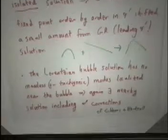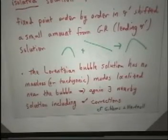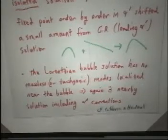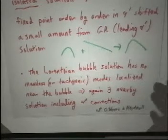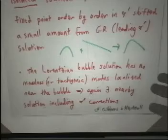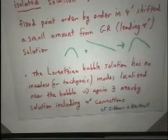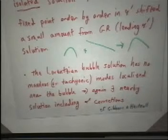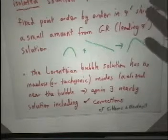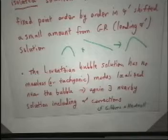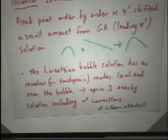In the Lorentzian case, in the four dimensions, we've explicitly studied the small fluctuations, and one finds nothing localized near the bubble, no massless or tachyonic modes. And I believe these results have been generalized recently to higher dimensions by Gibbons and Hartnell. So in working directly in Lorentzian space, also one sees that this should be a good solution order by order in alpha prime.